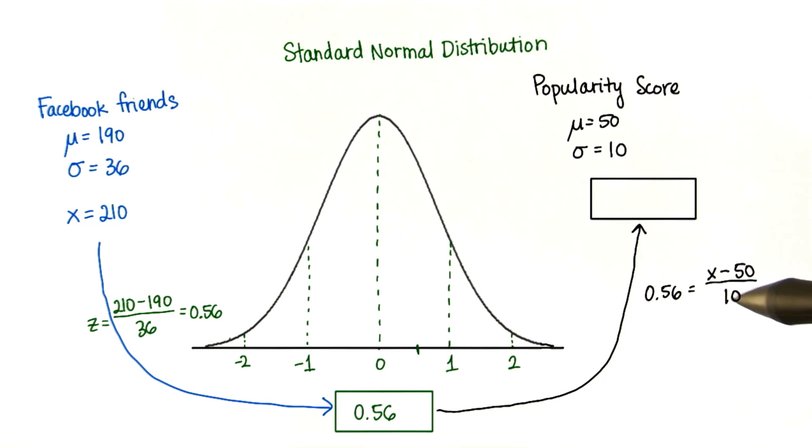All we do is multiply 0.56 by 10 and then add 50. This gives us 55.6.